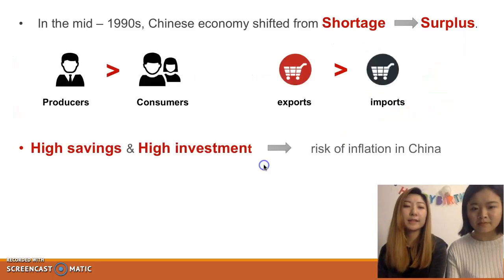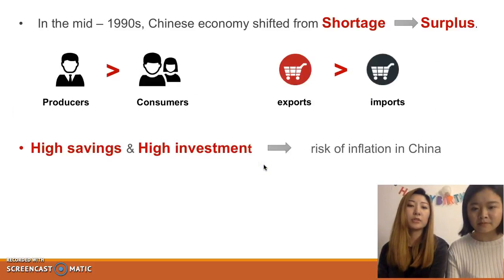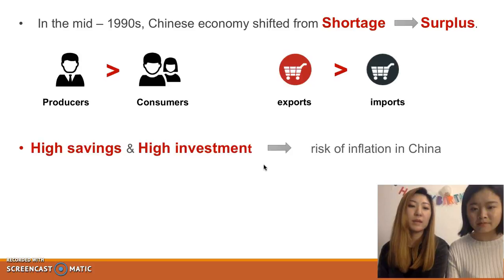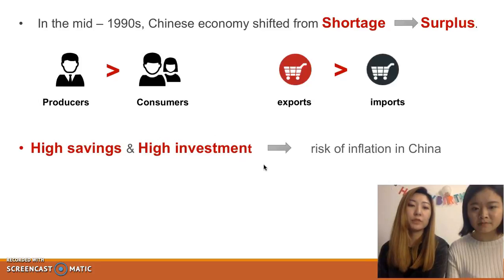So, the inflation rate. In the mid-1990s, the Chinese economy grew from shortage to surplus. The higher domestic savings supported higher investment and increased the risk of inflation in China. The policy makers should control the foreign trade surplus, therefore reducing the country's inflation rate.